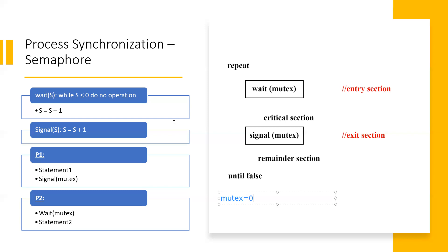In the critical section, we have entered — we have seen our consumption and execution — and at the end we decrement. After that we will exit through the exit section with the signal statement. And yes, the mutex — the semaphore variable — will also be updated because it will change its value when it exits.